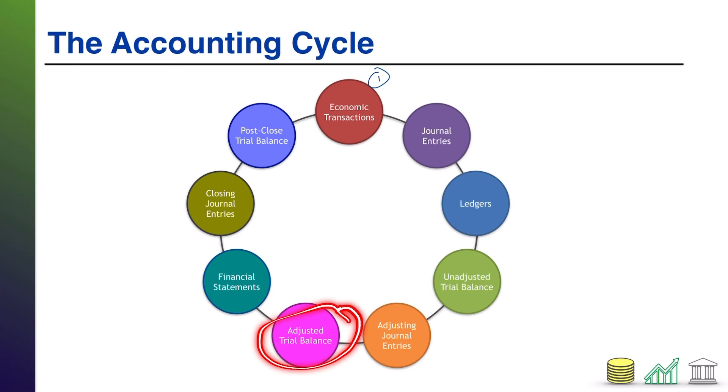After that, another trial balance is produced, the adjusted trial balance. Having gone through the adjustments of the prior step, the adjusted trial balance is then used to prepare your financial statements. Okay, so this is the key right here. This is the communication stage. Those financial statements are then used to communicate the activity of the business to relevant parties.